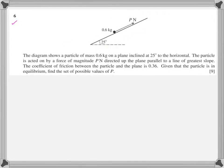Question six: a particle of mass 0.6 kg sits on a plane inclined at 25 degrees, acted on by a force P newtons directed up the plane along the line of greatest slope. Coefficient of friction is 0.36. Given the particle is in equilibrium, find the set of possible values of P. In friction problems, equilibrium is limiting equilibrium — two possibilities: the particle is about to slide up, or about to slide down. Friction acts opposite to the tendency of motion.